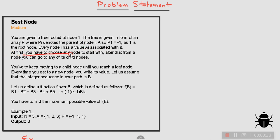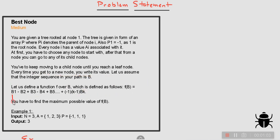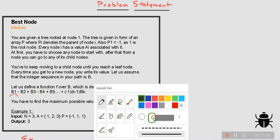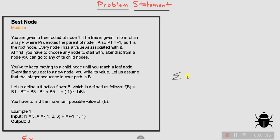First, you have to choose any node to start with. From a node, you can go to any of its child nodes. You keep moving to a child node until you reach a leaf node. Every time you visit a new node, you write its value. Let's assume you have a path integer sequence called B. We define a function as B1 minus B2 plus B3 minus B4... which is the summation of (-1)^i * B[i] from i equals 1 to k.